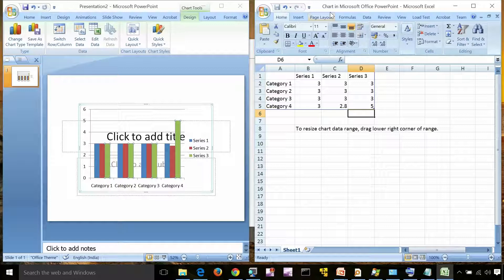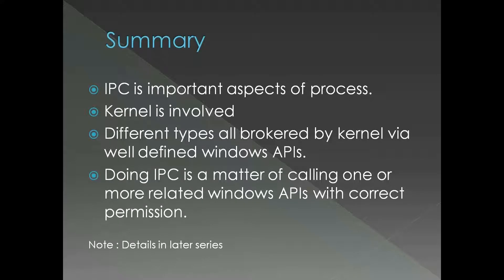This is another example of inter-process communication that is not very obvious. To summarize: inter-process communication is an important aspect of processes, the kernel is involved to mediate all IPC, and different types of IPC are all brokered by the kernel via well-defined Windows APIs. Doing IPC is a matter of calling one or more APIs with the correct permission and in the correct order. We will see the programming part of these things later.